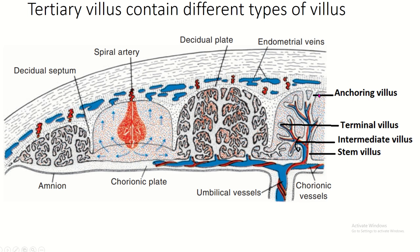The villous types are: anchoring villi, terminal villi, intermediate villi, and stem villi. All villi contain different branches of fetal blood vessels, except the anchoring villi.